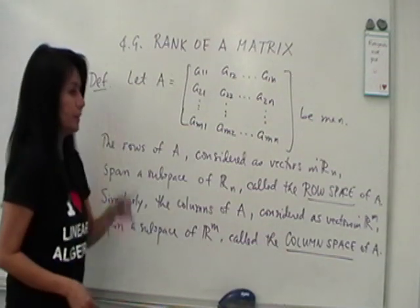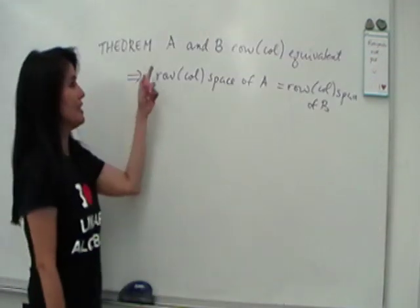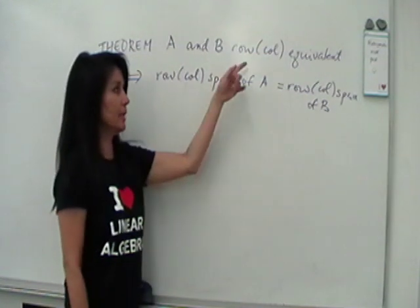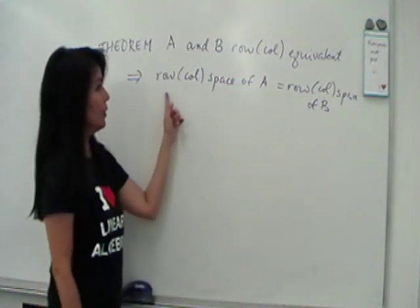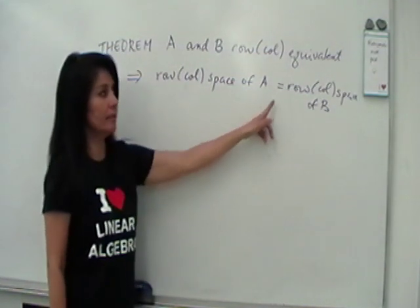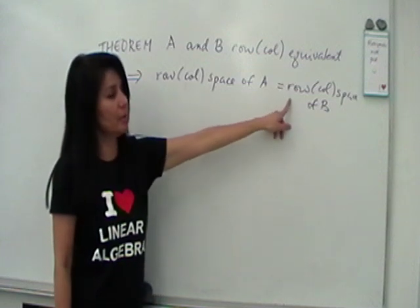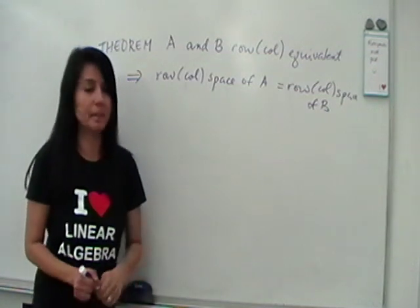So that's our first definition for this. Next, we have the theorem that says that if A and B are row or column equivalent, then the row or column space of A is exactly the same as the row or column space of B.